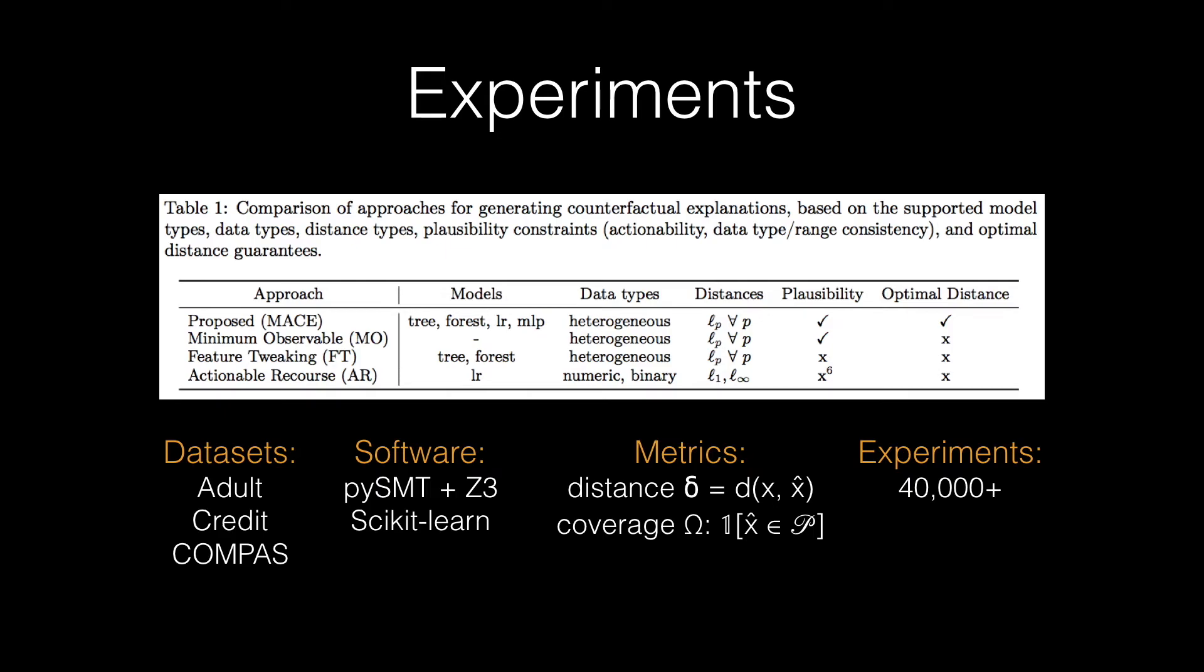As for the metrics, the distance and coverage criteria were used, where coverage indicates the percentage of factual samples or individuals that were denied a loan, for which our approach, or any approach that we compare with, generates plausible counterfactuals.